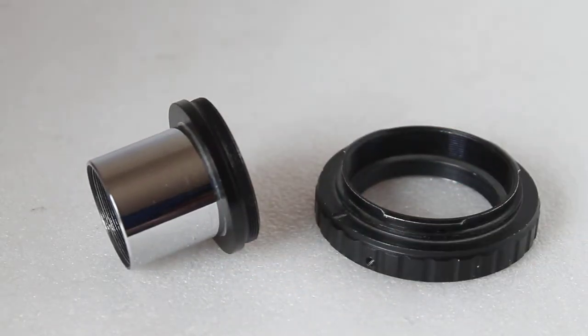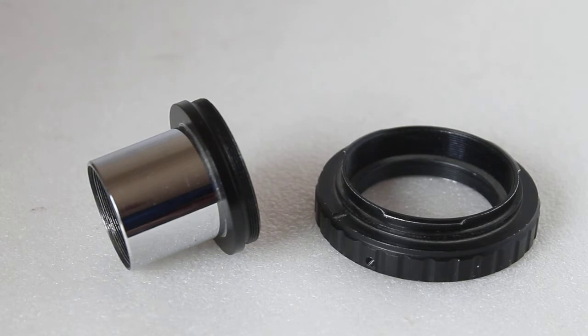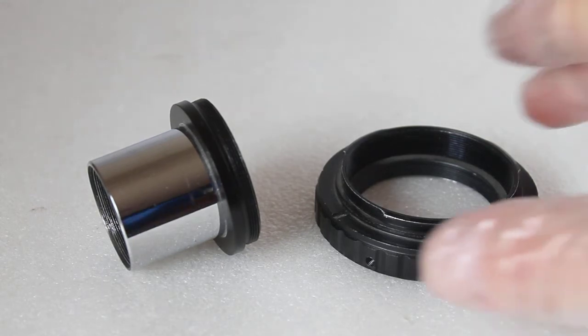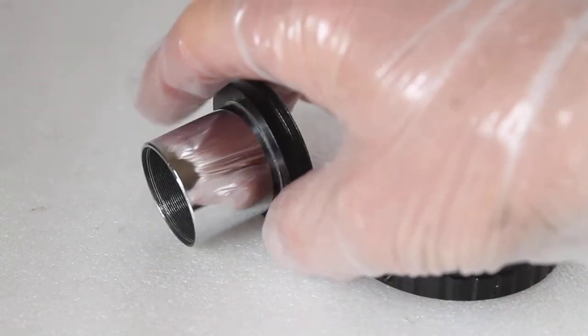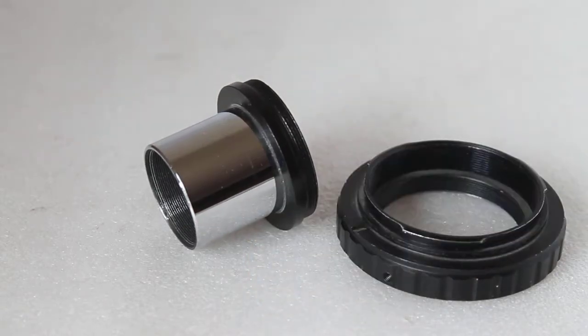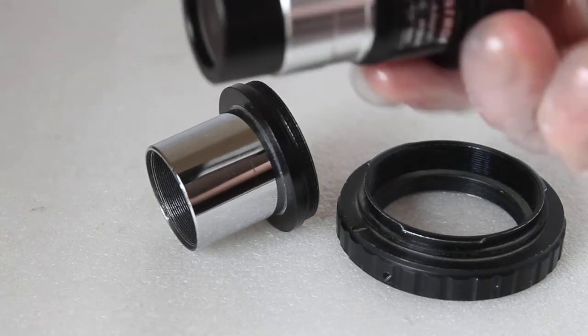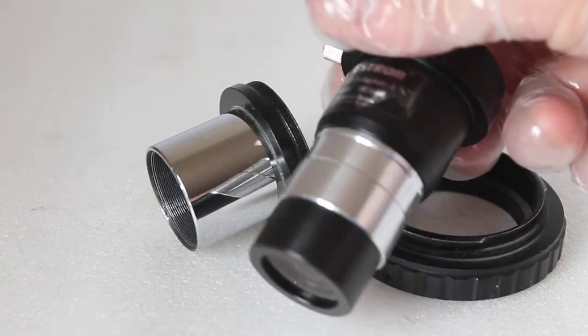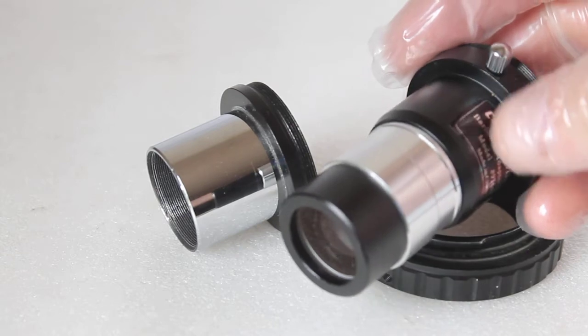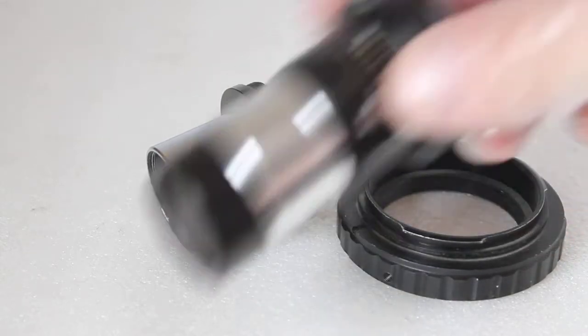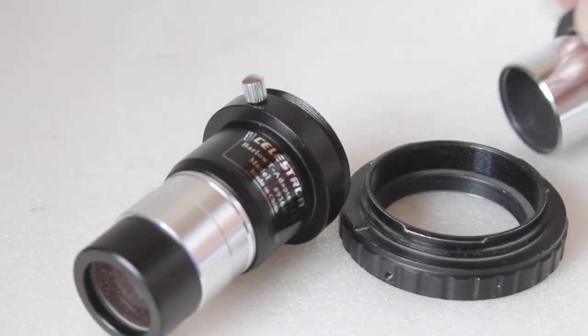But that means going out and spending some extra money. But maybe you've already got in your telescope kit something that may already be a solution and you probably see this right. This is a Celestron Barlow lens, but it's probably the same as the Sky Watcher deluxe Barlow lens.